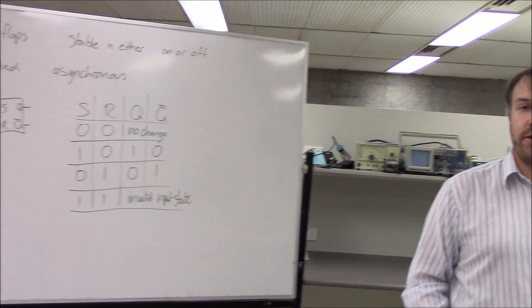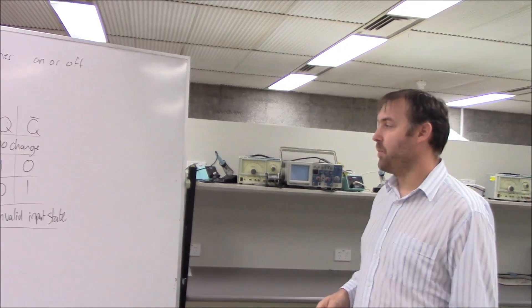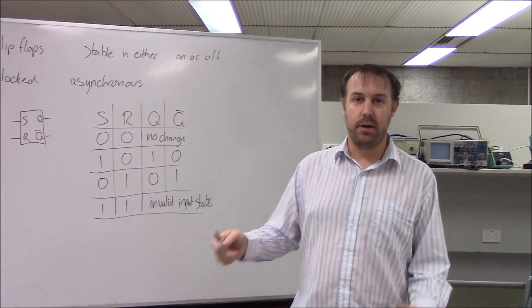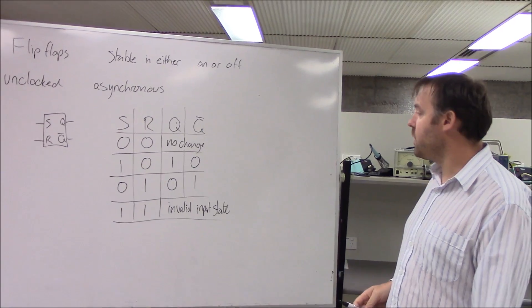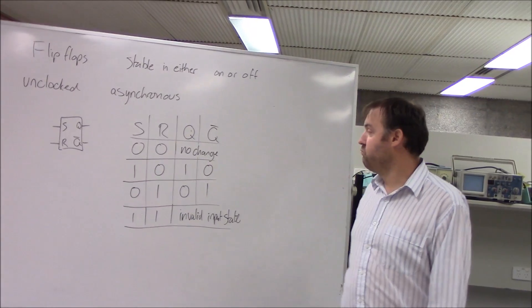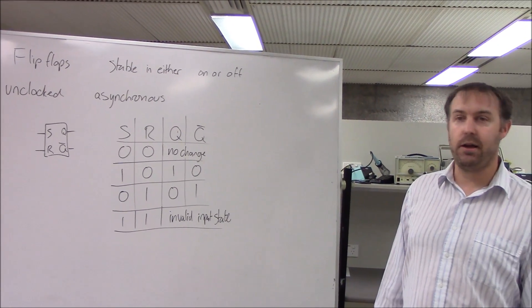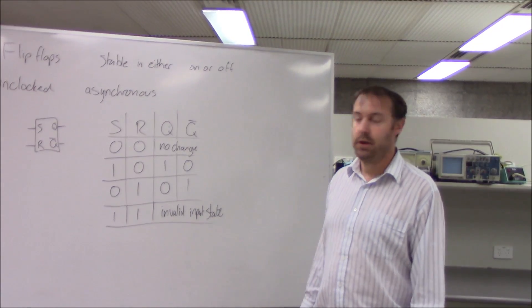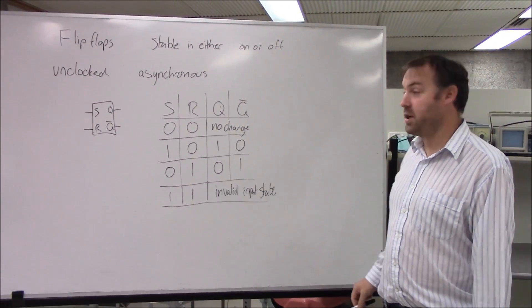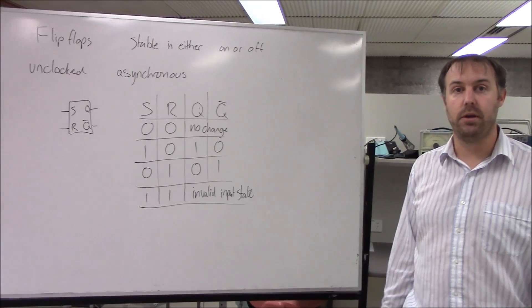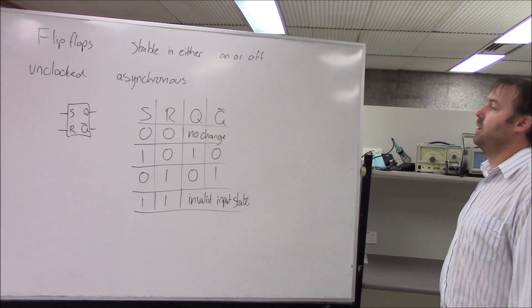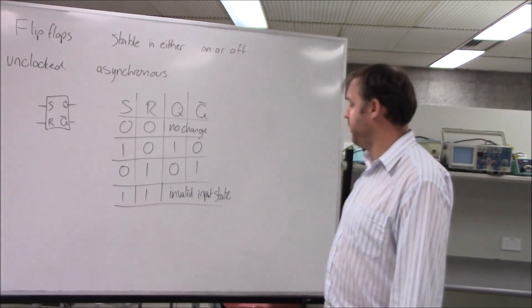So this is an invalid input state. If I have both set and reset high, this is going to be a problem because it's trying to set both the outputs high and it can't do that. As we talked about before, what would actually happen if you did that? Because there's nothing stopping you from setting it high. Well it would probably be unpredictable. It might settle on one of them and you don't know which one, or it might set both of them high somehow, or it might do something else. I don't think it will damage it. Generally they're protected for that.